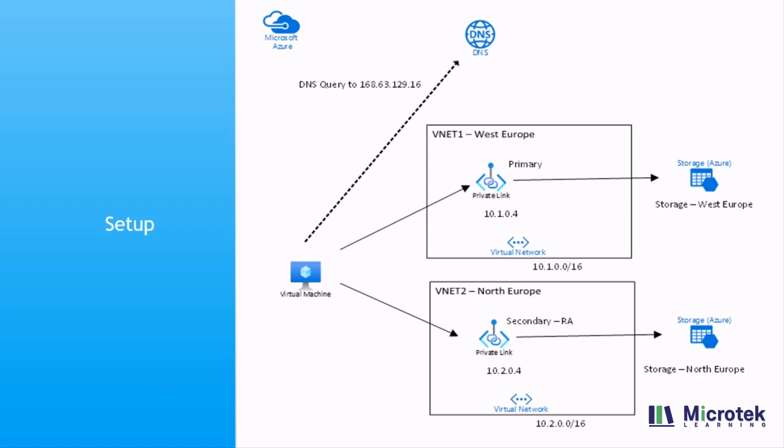Also, when you perform this failover, DNS configuration comes into picture where the CNAME gets swapped. This means you will actually use the same FQDN to access your storage, but instead of the DNS pointing to the primary it will be pointing to the secondary instance or the secondary region.